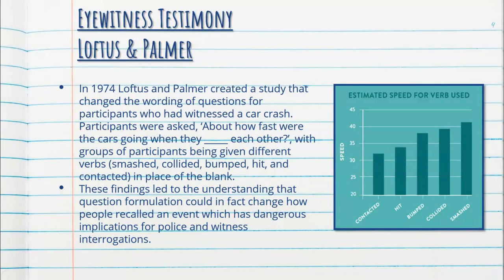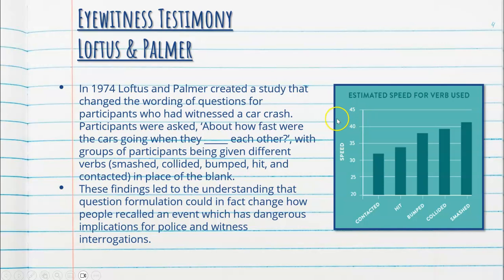Another very famous study into eyewitness testimony was done by Loftus and Palmer in 1974. They created a study that changed the wording of questions for participants who had witnessed a car crash. Participants were asked how fast the cars were going when they 'blank' each other. Groups of participants were given different verbs — smashed, collided, bumped, hit, and contacted — in place of the blank word. The more severe the word, for example 'smashed,' the more speed that was reported. These findings showed that question formulation could change how people recalled an event, which has dangerous implications for police and witness interrogations.